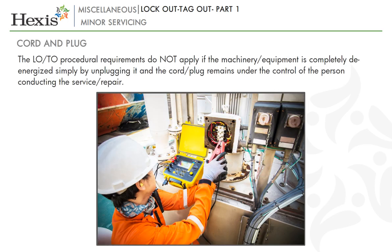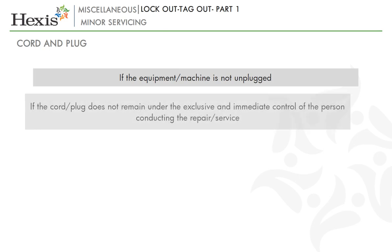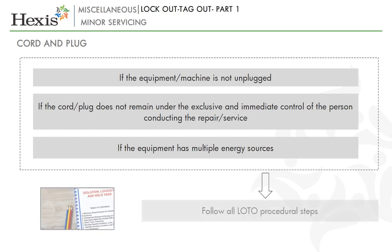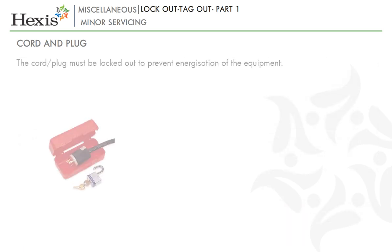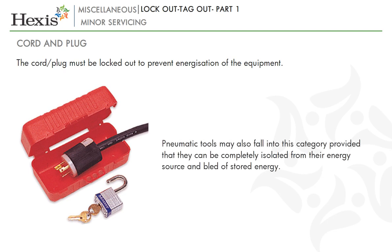The LOTO procedural requirements do not apply if the machinery or equipment is completely de-energized simply by unplugging it and the cord and plug remains under the control of the person conducting the service or repair. If the equipment is not unplugged, if the cord and plug does not remain under the exclusive and immediate control of the person conducting the repair or service, or if the equipment has multiple energy sources, then the LOTO standard applies and all procedural steps must be followed. The cord and plug must be locked out to prevent energization of the equipment. Pneumatic tools may also fall into this category provided that they can be completely isolated from their energy source and bled of stored energy.